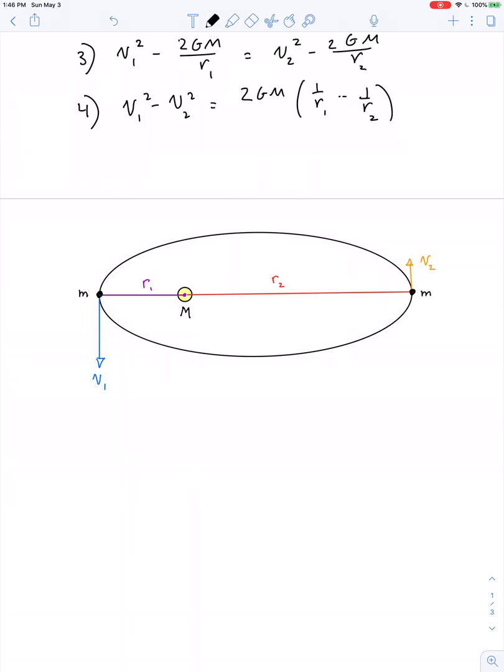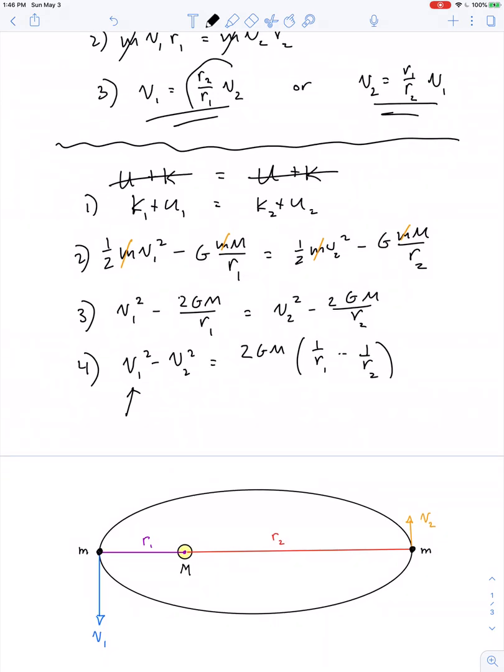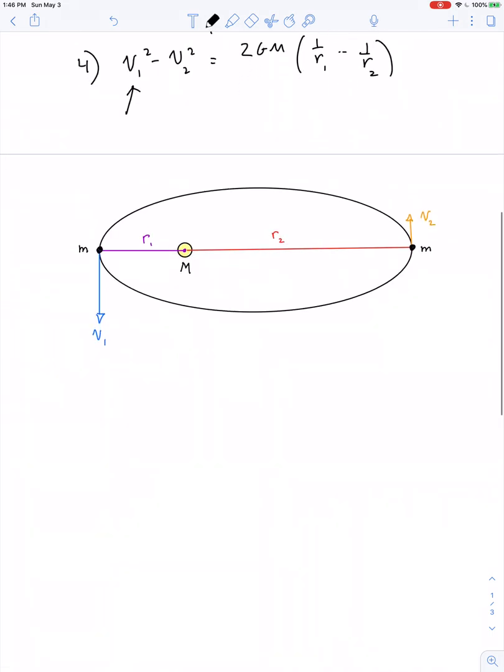Let's substitute out for velocity at position number 1, for example. So we can replace it with R2 over R1 quantity times V2. R2 over R1 times V2 quantity squared minus V2 squared is equal to 2 GM 1 over R1 minus 1 over R2.